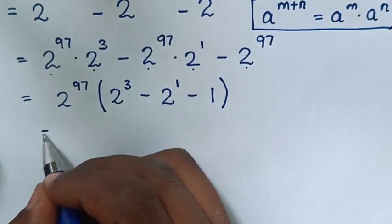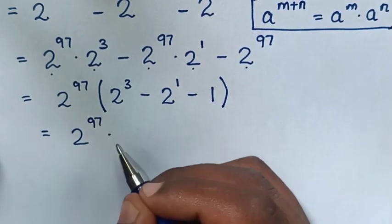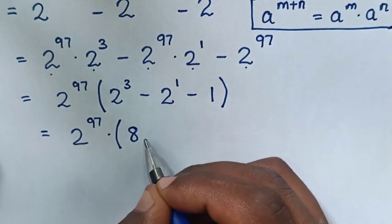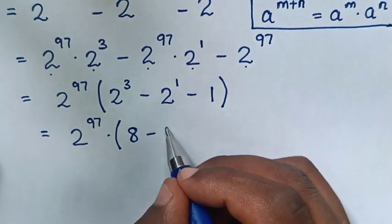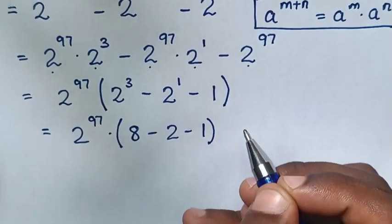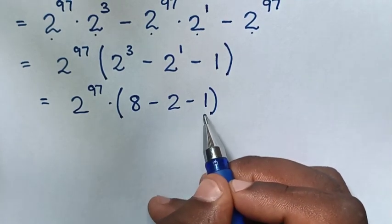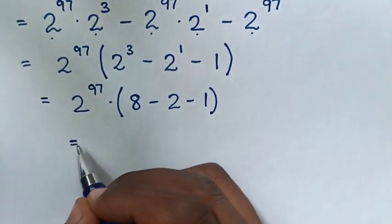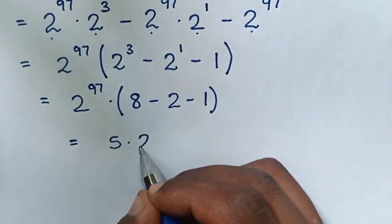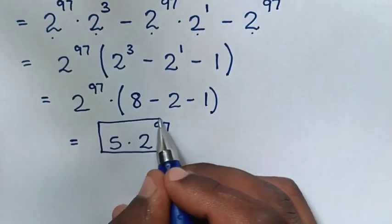Then it will be equal to 2 power of 97 times bracket: 2 power of 3 is the same as 8, minus 2 power of 1 is 2, minus 1, bracket. From inside the brackets, 8 minus 2 is 6, 6 minus 1 is 5. So it will be equal to 5 times 2 power of 97. So this is our final answer.